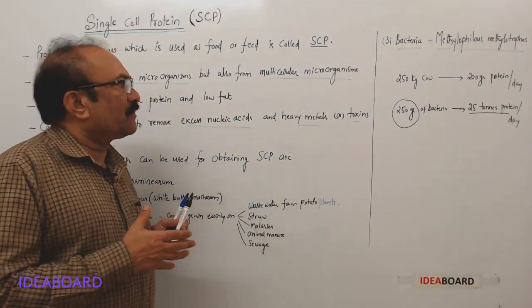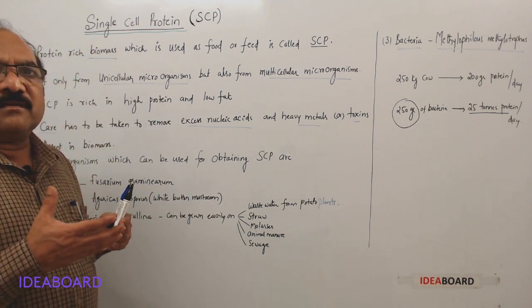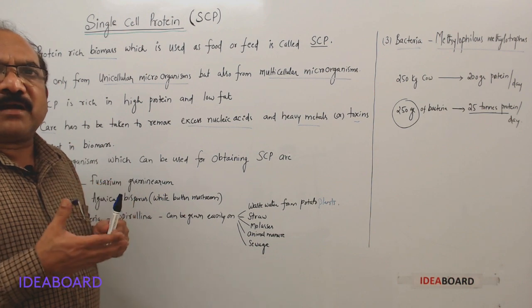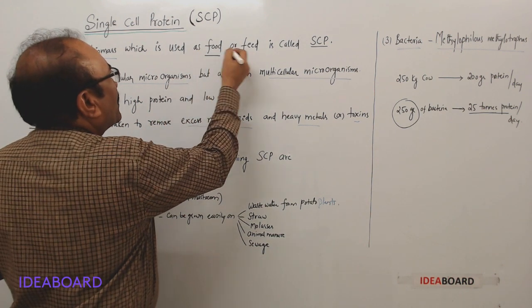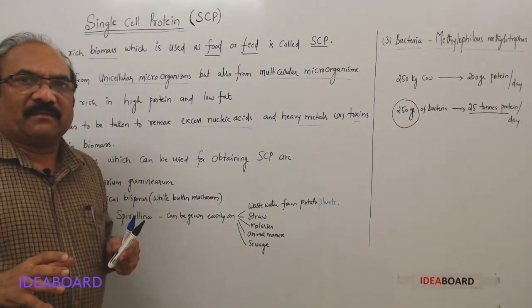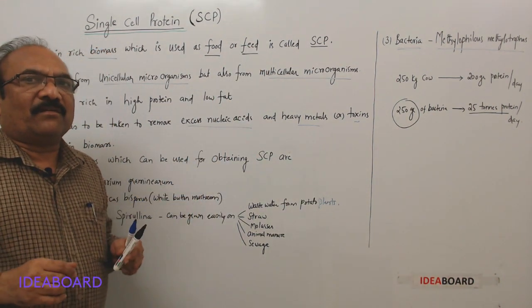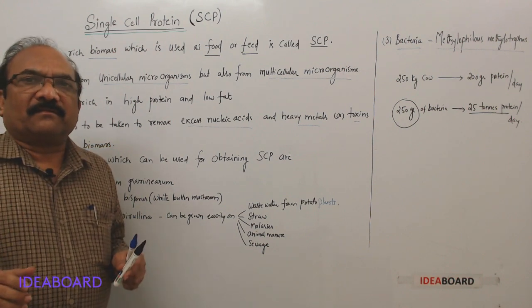So in that way, this biomass is dried up and it is used as food for human beings and also it is used as feed for the cattle. That is the specialty of this single cell protein.